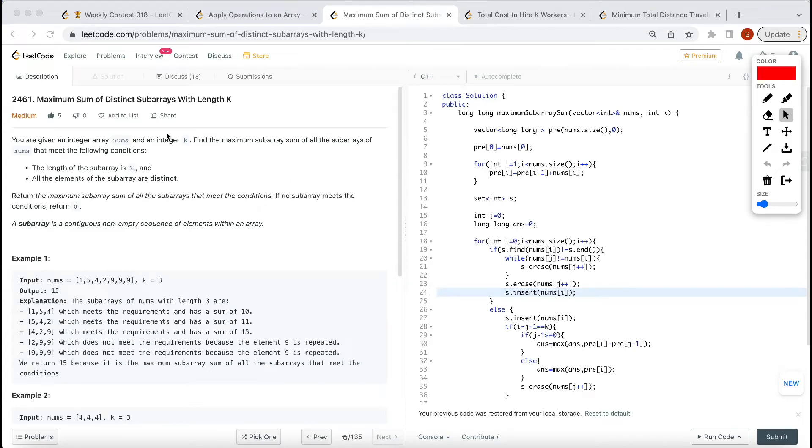Hello guys, welcome back to my channel ThinkCode. Today's LeetCode contest challenge is the second question: Maximum Sum of Distinct Subarrays with Length K. In this question, we have to find a subarray which has length K, all elements are distinct, and its sum is maximum.